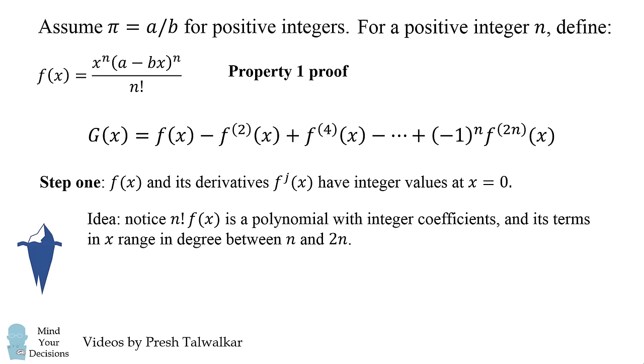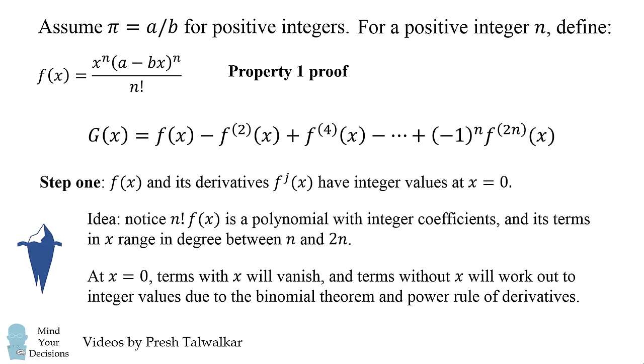At x equals 0, the terms with x will vanish and terms without x will work out to integer values due to the binomial theorem and the power rule of derivatives. Now there's a lot going on in this step, but I'm sure you'll be able to work out the details and it'll be much more satisfying if you do so.